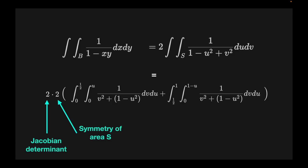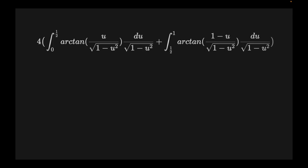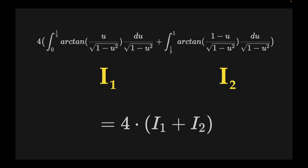First we integrate with respect to v, which yields: 4 times the sum of two integrals. The first integral I1 goes from 0 to 1/2 over arctan(u / √(1−u²)) times du / √(1−u²). The second integral I2 goes from 1/2 to 1 over arctan((1−u) / √(1−u²)) times du / √(1−u²). We now need to solve each of these.